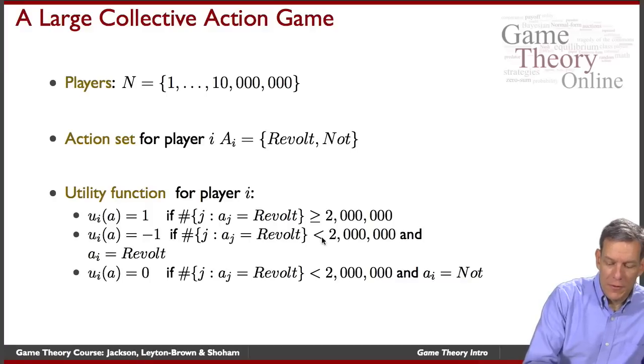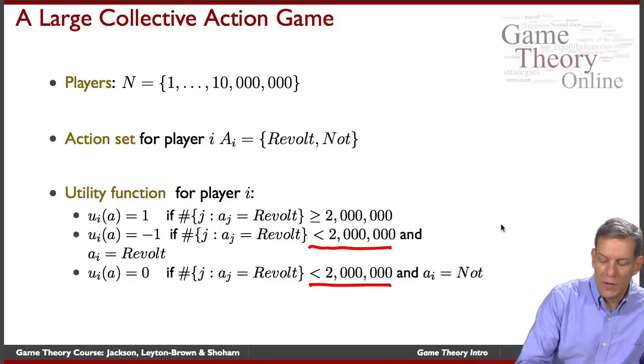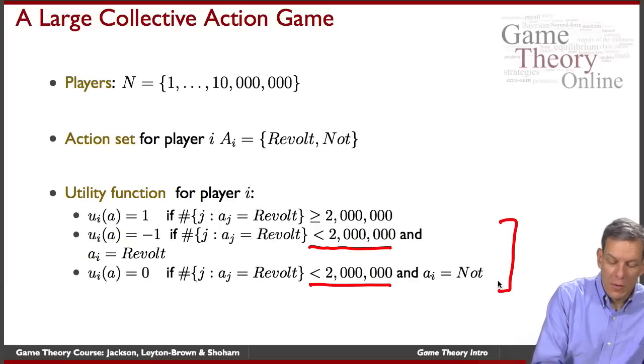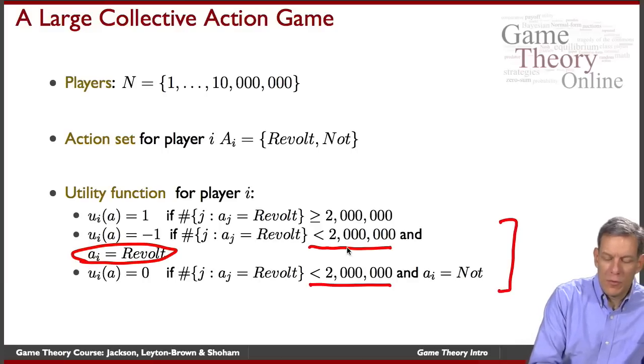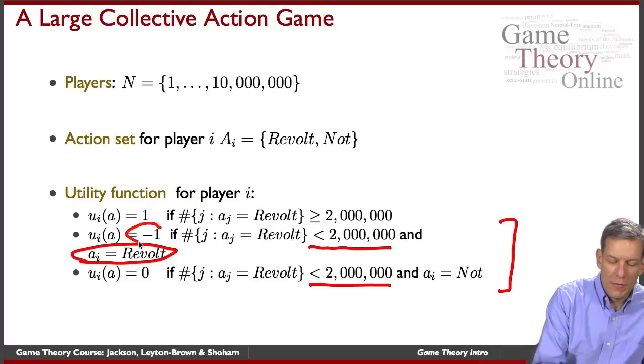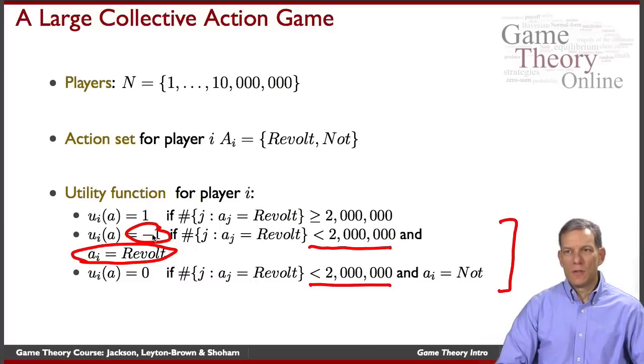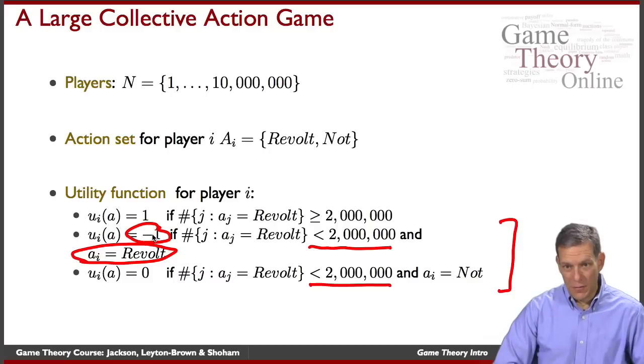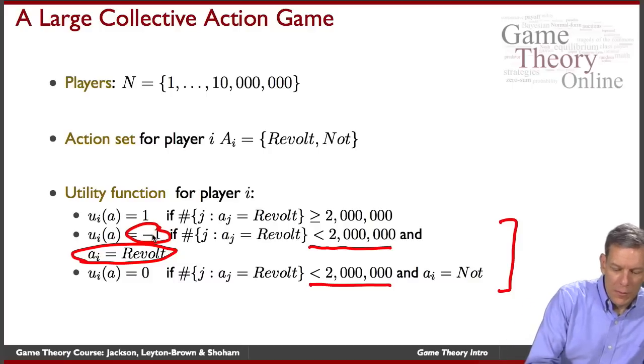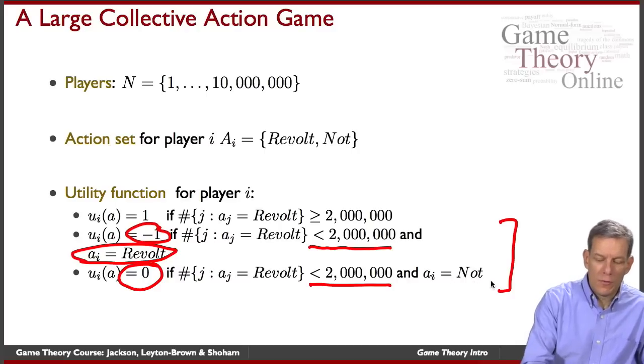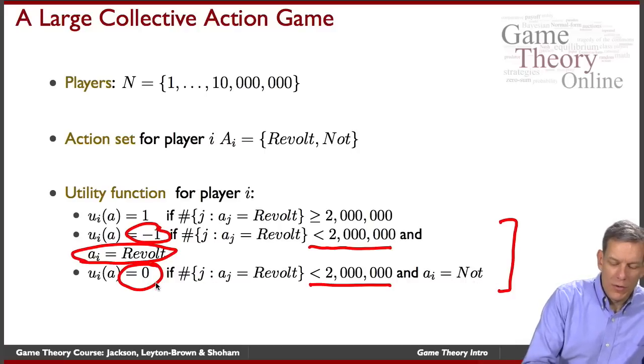What happens if things fail? If we end up with less than two million, then it depends on whether you were a participant in the revolt or not. If player i was a participant in the revolt and it fails, then they get a payoff of negative one. This could be in a situation where they're punished by the government or face some other kinds of sanctions. They get a payoff of zero if the revolt's not successful and they didn't participate, so they weren't one of the people that was actually revolting.